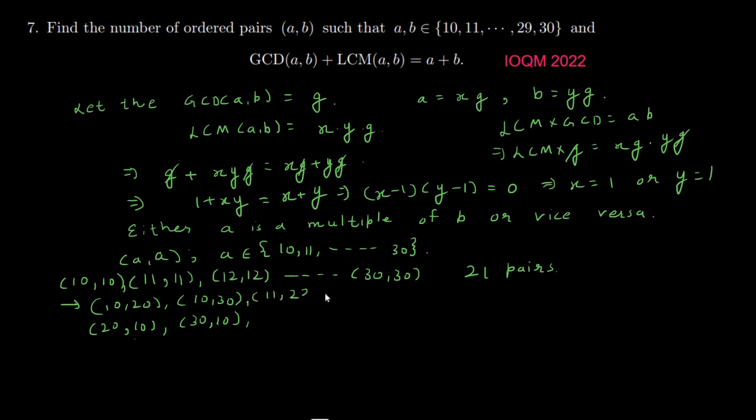Next we will have (11, 22) and its converse, then (12, 24), (13, 26), (14, 28), and (15, 30). So these are 7 pairs and exactly 7 converses. For example, corresponding to (15, 30) the converse will be (30, 15). So 14 pairs. Total number of pairs will be 21 + 14 = 35.